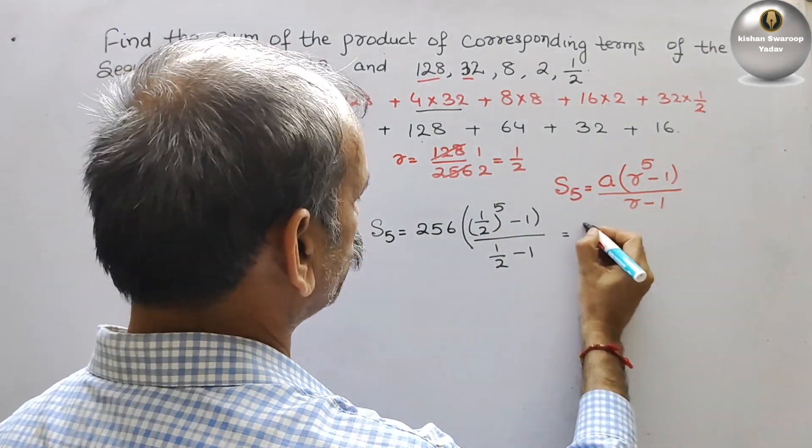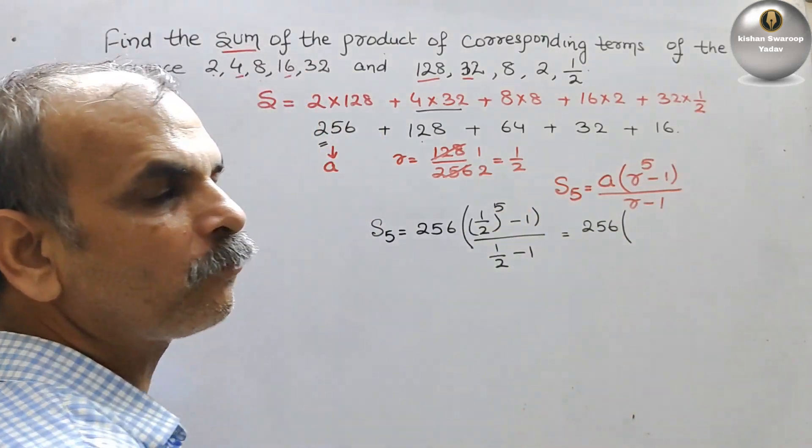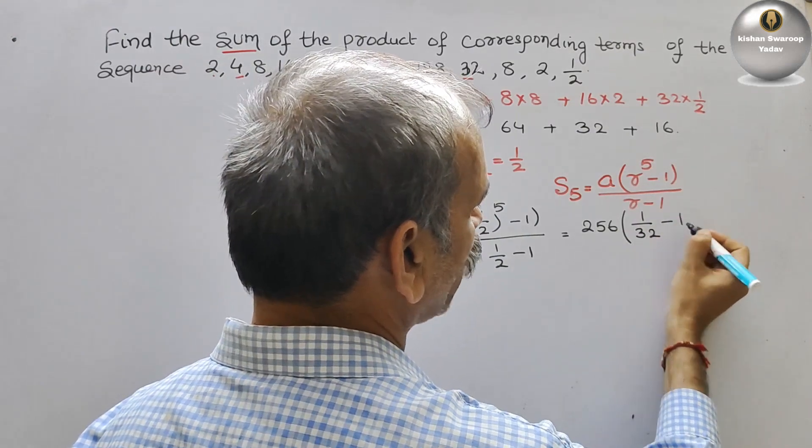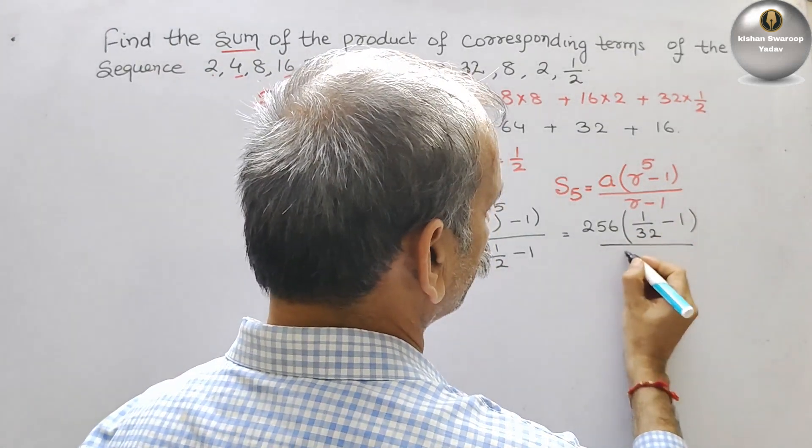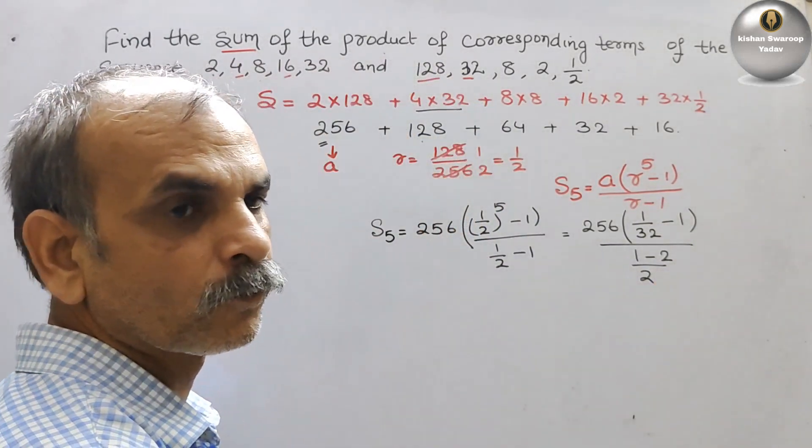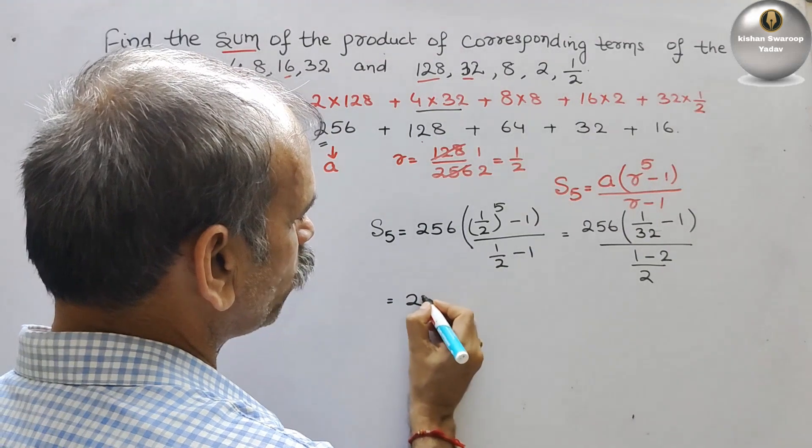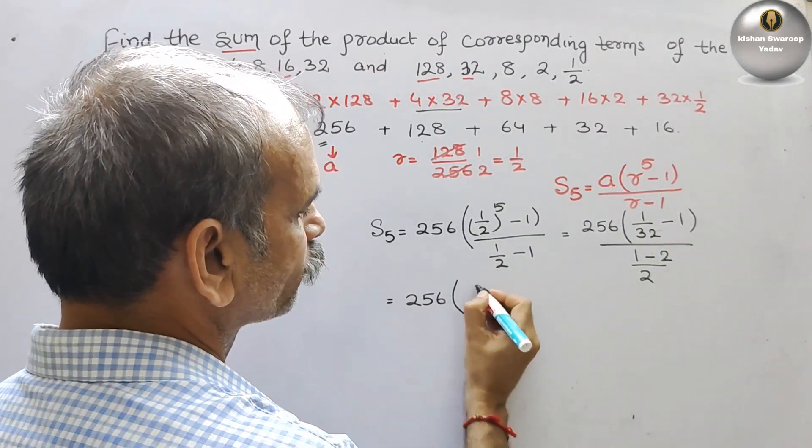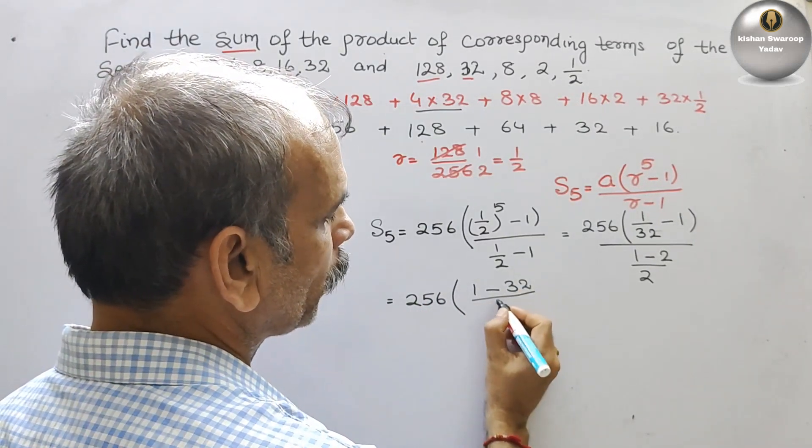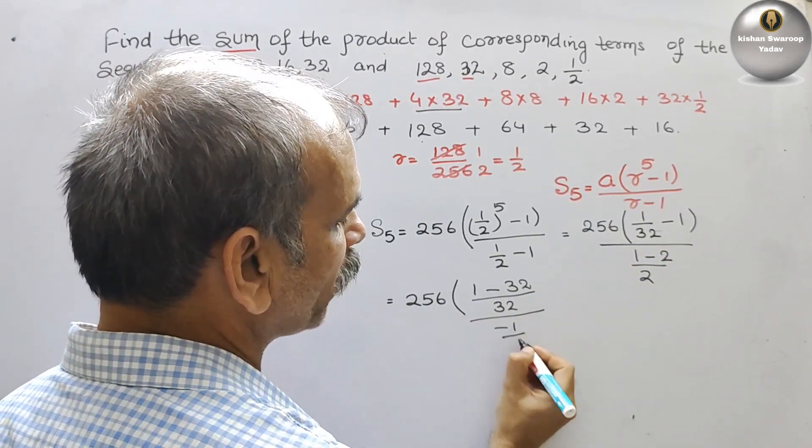Here comes 256. 2 to the power 5 is 32, so 1/32 minus 1. Take the LCM. We will get (1 - 32)/32. And here comes -1/2 in the denominator.